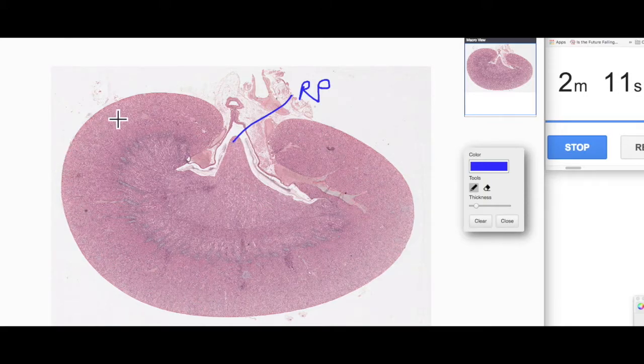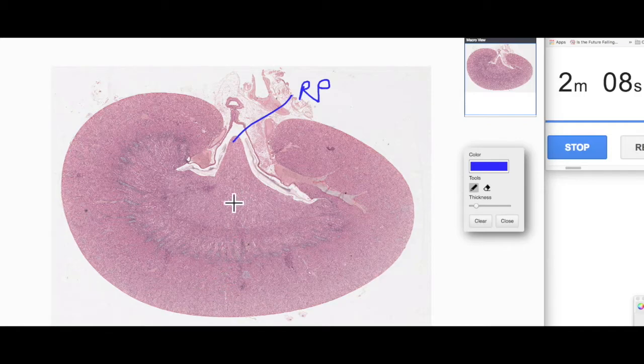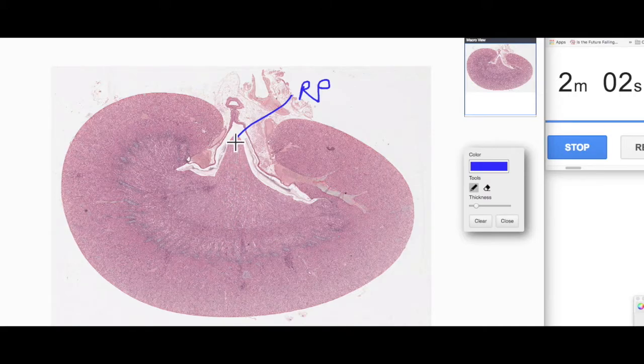The blood is filtered within the cortex, and then whatever doesn't get reabsorbed remains behind and goes on to form urine. It travels through the collecting ducts and eventually empties into this region here.